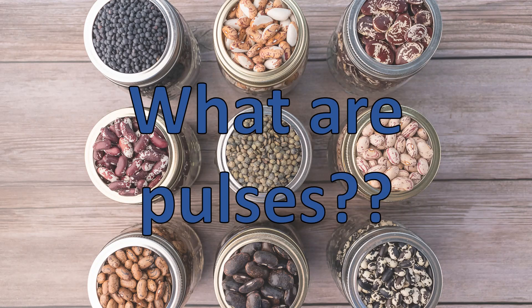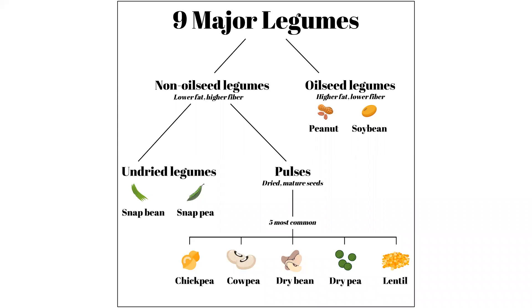And hint — everything in this photo — these are all nine different types of pulses. This figure is from a paper that one of my professors and I recently wrote earlier this year. The main point of this figure is really to show the difference between legumes and different types of legumes.